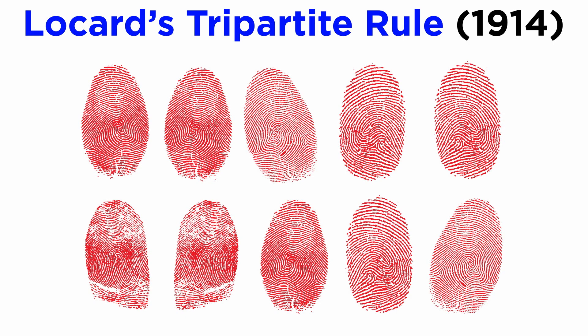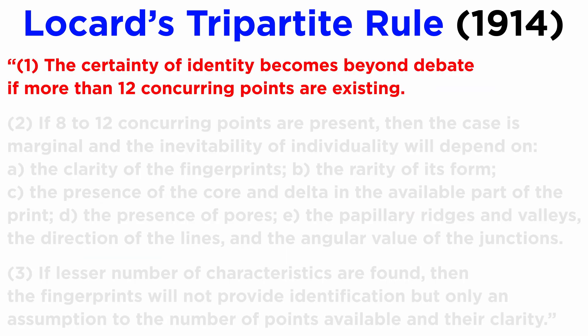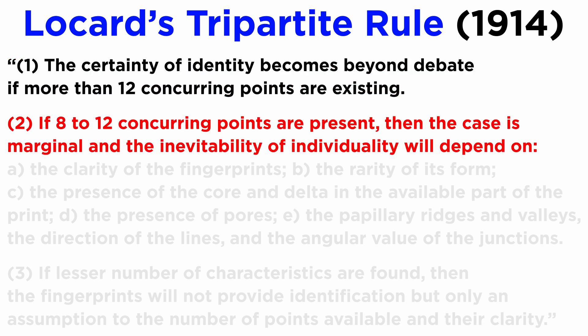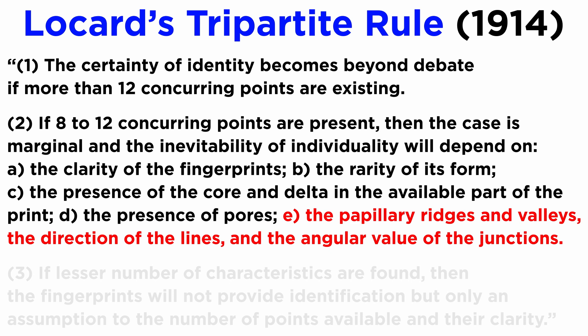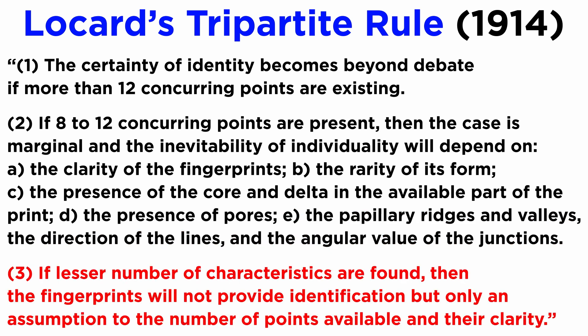In 1914, Dr. Edmund Locard put forth the tripartite rule concerning fingerprint identification, aimed at establishing a standard of proof. Locard studied and compared a vast number of fingerprints and laid out his assumptions as follows. 1. The certainty of identity becomes beyond debate if more than 12 concurring points are existing. 2. If 8 to 12 concurring points are present, then the case is marginal and the inevitability of individuality will depend on: a. the clarity of the fingerprints, b. the rarity of its form, c. the presence of the core and the delta in the available part of the print, d. the presence of pores, e. the papillary ridges and valleys, the direction of the lines, and the angular value of the junctions. 3. If a lesser number of characteristics are found, then the fingerprints will not provide identification, but only an assumption based on the number of points available and their clarity.